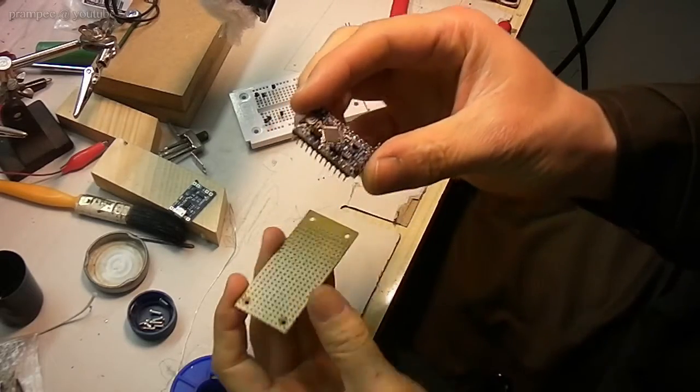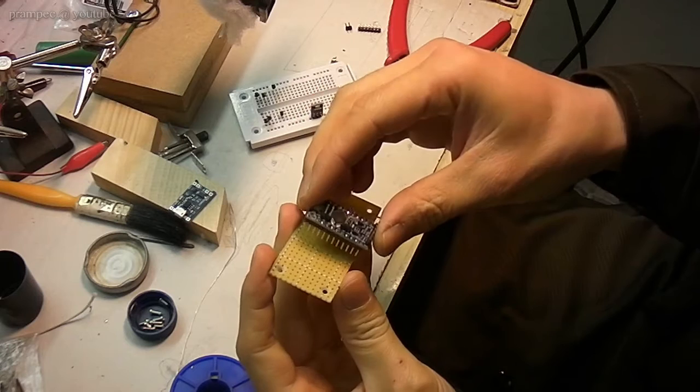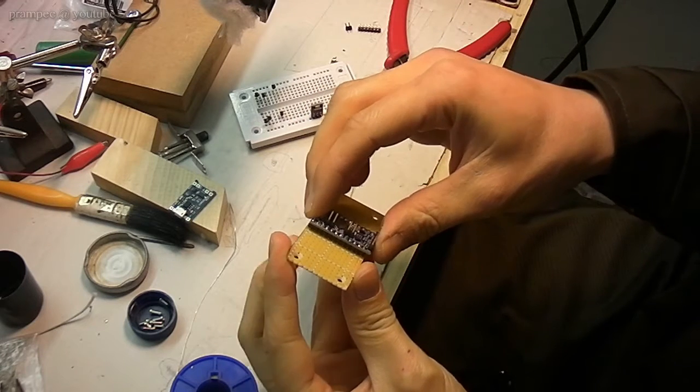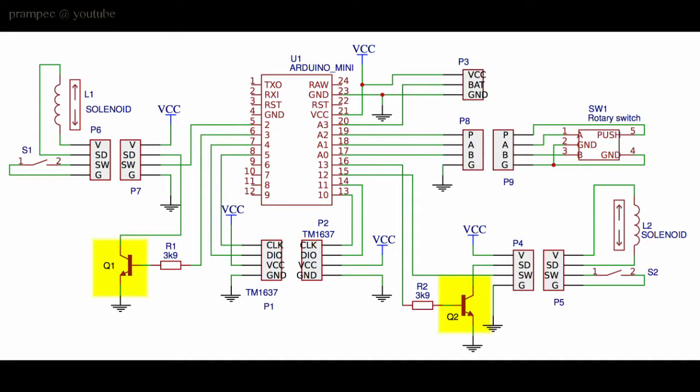I have used the Arduino Pro Mini in a setup where I can reprogram the clock later on. The wiring is very basic. I have used NPN transistors to drive the solenoids. The inputs on the Arduino are pulled high.